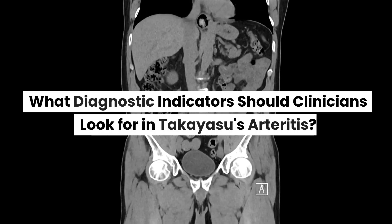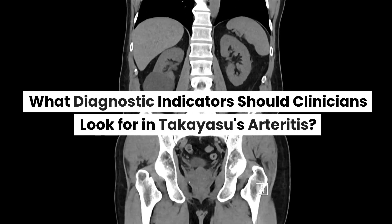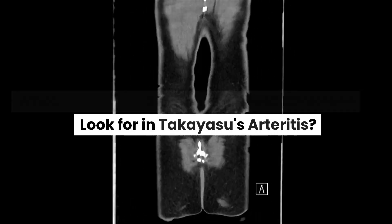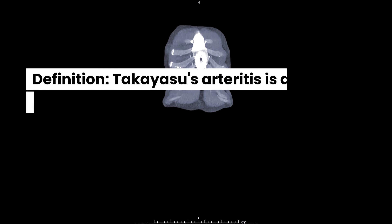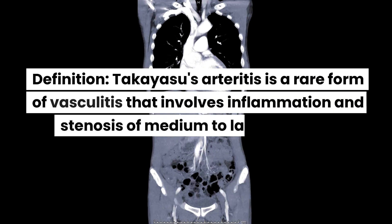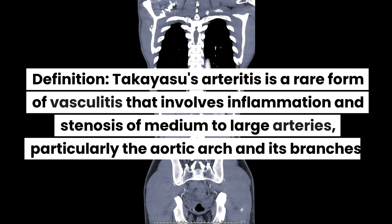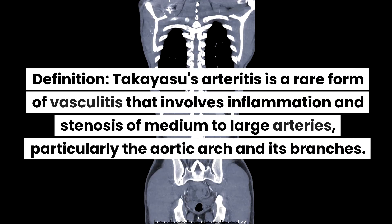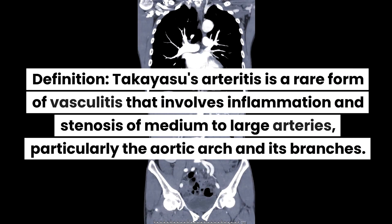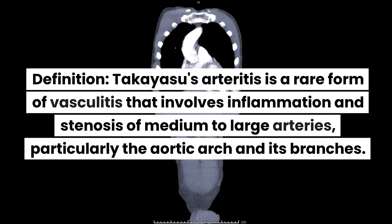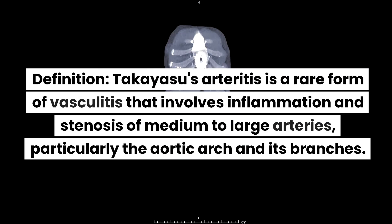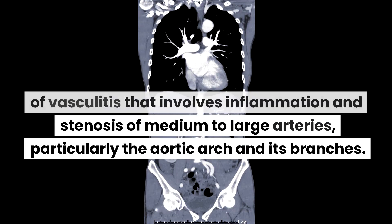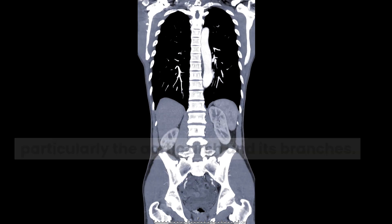What diagnostic indicators should clinicians look for in Takayasu's Arteritis? Takayasu's Arteritis is a rare form of vasculitis that involves inflammation and stenosis of medium to large arteries, particularly the aortic arch and its branches.